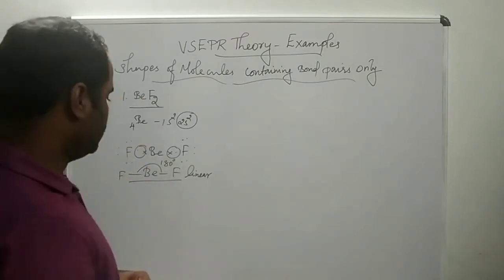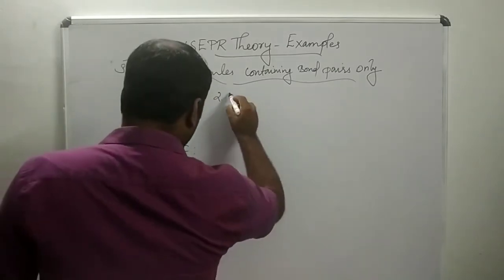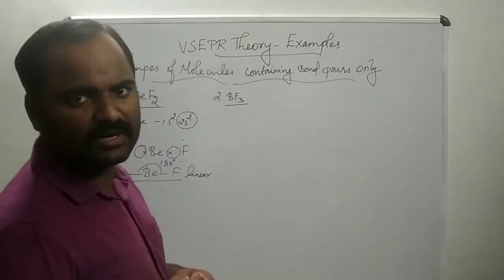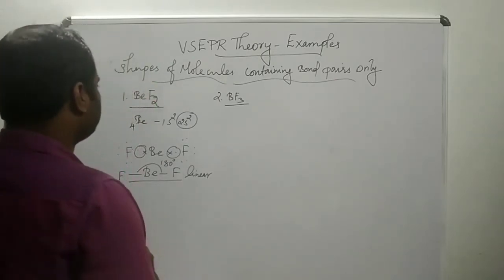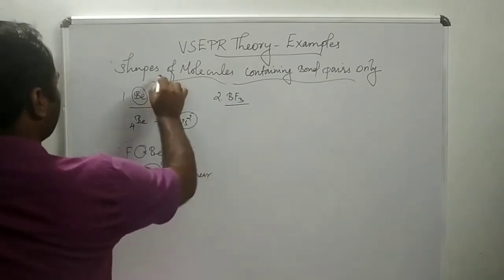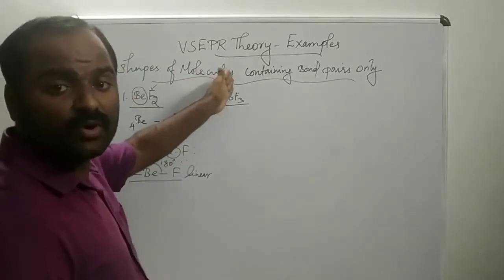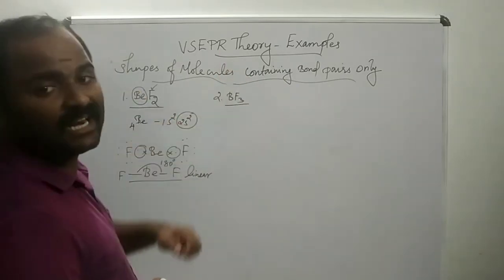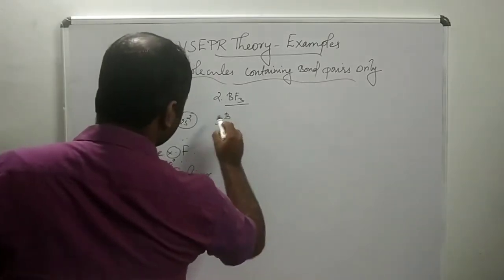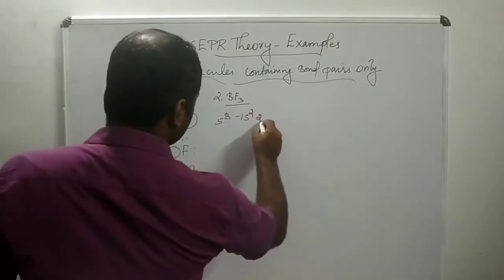The second example is boron trifluoride, BF3. In BEF2, beryllium does not follow the octet rule but fluorine does. In BF3, boron is the central atom. The atomic number of boron is 5, and the electronic configuration is 1s2 2s2 2p1, so boron has 3 electrons in its valence shell.